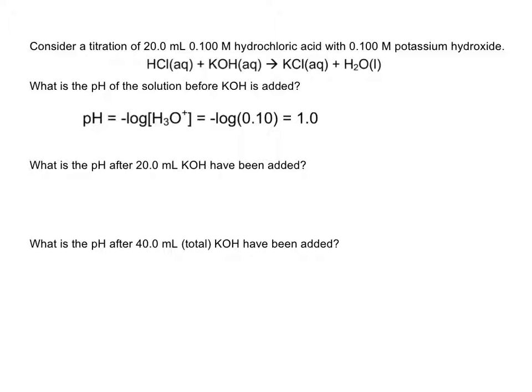What's the pH after 20 milliliters of KOH has been added? With 20 mL of HCl and 20 mL of KOH at equal concentrations, we're at the equivalence point — a stoichiometrically equivalent ratio. When you have a strong acid and a strong base, the pH at the equivalence point equals 7, because we have equal amounts of H₃O⁺ and OH⁻. You don't even need to do a calculation.